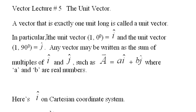In particular, the unit vector (1, 0°) is called i with a little cap on it, and the unit vector (1, 90°) is called j. Any vector may be written as the sum of multiples of i and j, such as A = ai + bj, where a and b are real numbers.